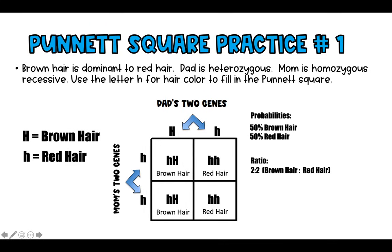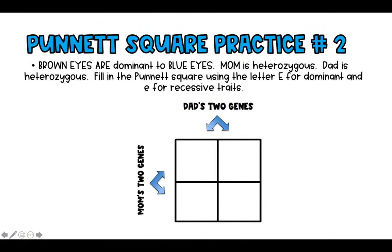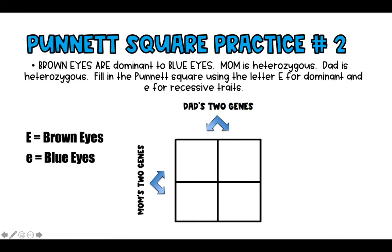Let's move on to one more practice problem. Brown eyes are dominant to blue eyes. Mom is heterozygous and dad is also heterozygous, meaning they both have one dominant and one recessive allele. Fill in the Punnett square using capital E for the dominant trait and lowercase e for the recessive trait.